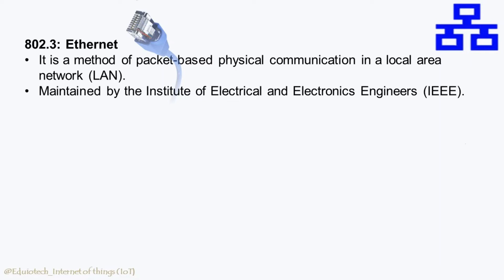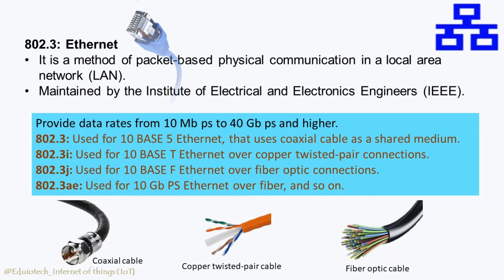802.3 Ethernet is a collection of wired Ethernet standards for the link layer. The shared medium in Ethernet can be performed using twisted pair cable, coaxial cable, or optic fibers. Data sent by source can be received by all connected devices. It is a method of packet-based physical communication in a LAN, maintained by the IEEE. These standards provide data rates from 10 Mbps to 40 Gbps and higher. Common variants include: 802.3 for 10-base-5 Ethernet using coaxial cable; 802.3i for 10-base-T over copper twisted pair; 802.3j for 10-base-5 over fiber optic; and 802.3ae for 10 Gbps Ethernet over fiber.